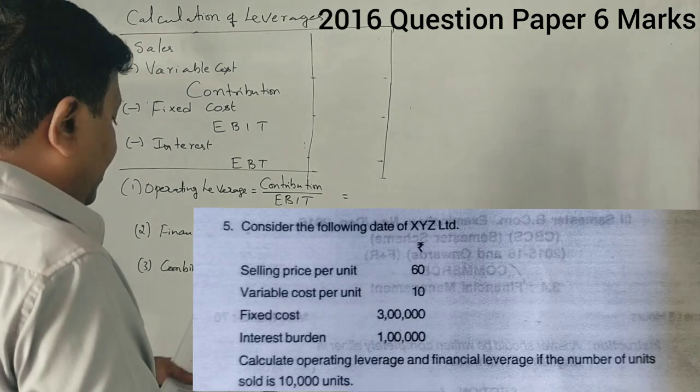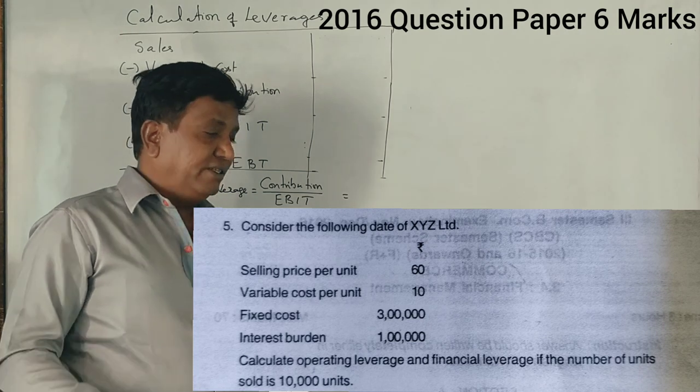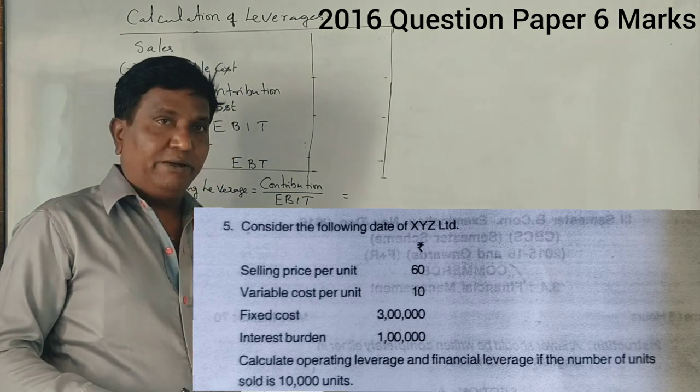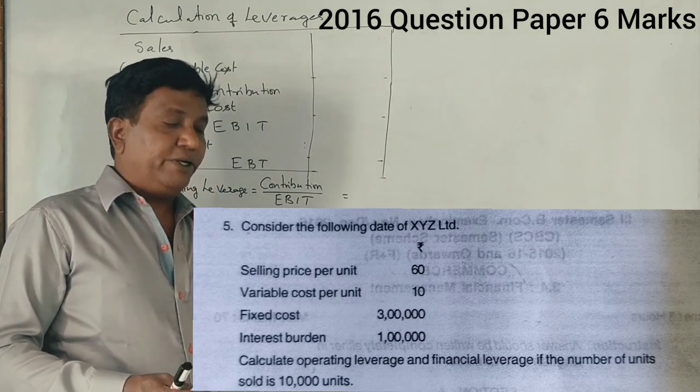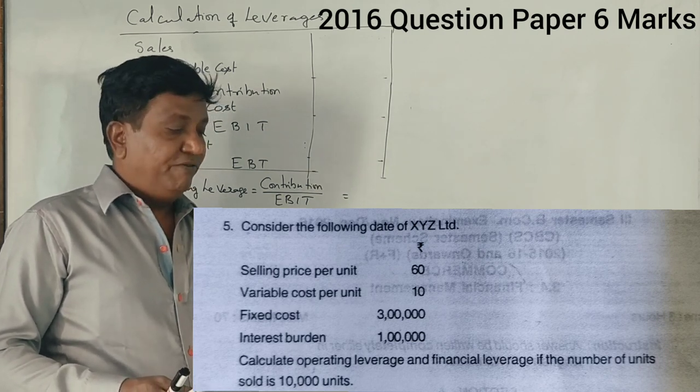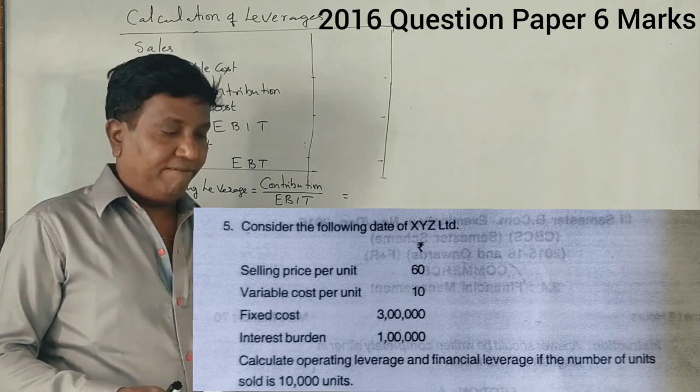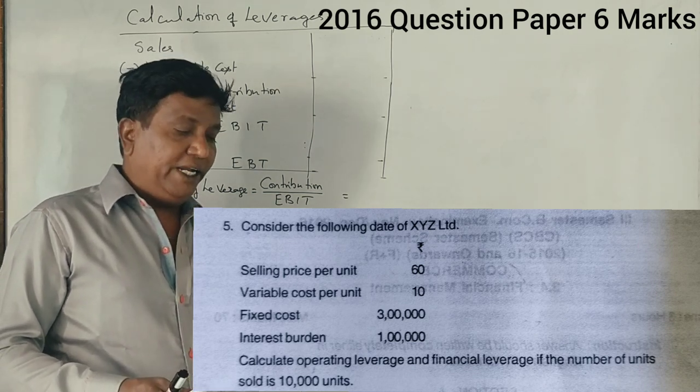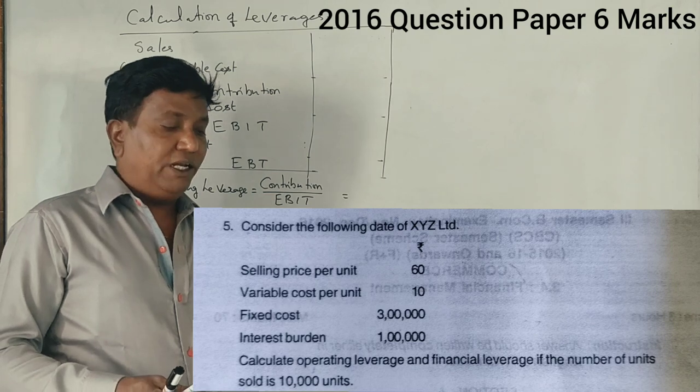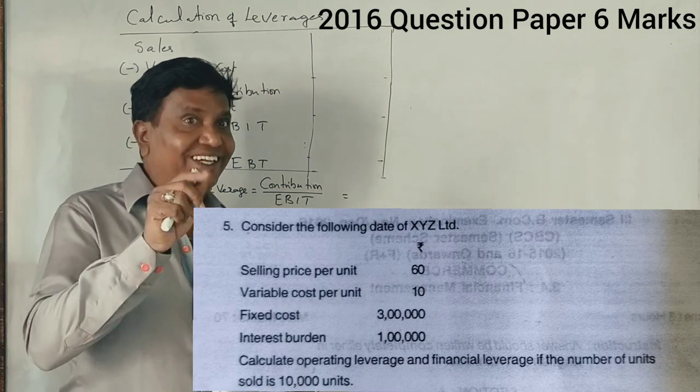In 2016, we have one more question on leverage. Consider the following data for XYZ Limited: Selling price per unit is 60 rupees, variable cost per unit is 10 rupees, fixed cost 3 lakhs, interest burden is 1 lakh. Calculate operating and financial leverage if the number of units sold is 10,000 units.